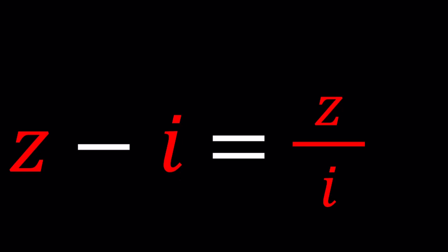Hello everyone, welcome to A plus B I. This channel is all about complex numbers, and in this video, we're going to be solving for a complex number. So we have Z minus I equals Z over I, and we're going to be solving for Z.